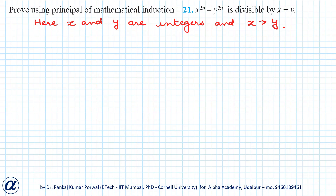In this question we have to prove using the principle of mathematical induction that x to the power 2n minus y to the power 2n is divisible by x plus y. To do that we have to first check P(1).